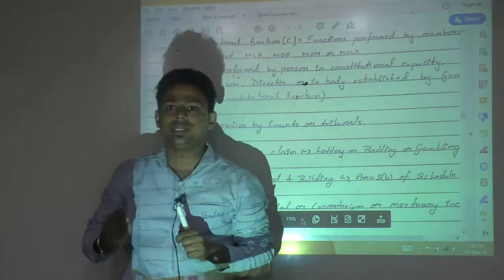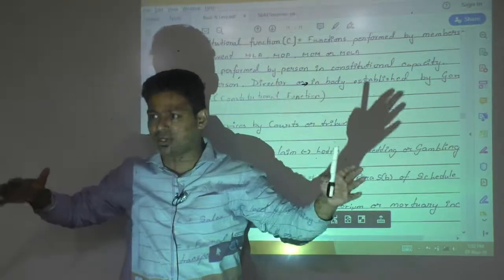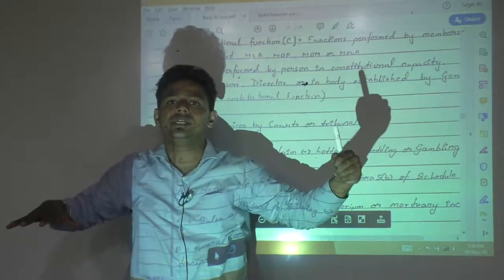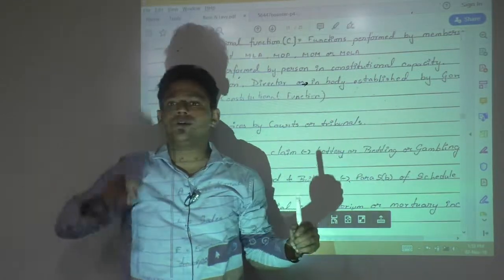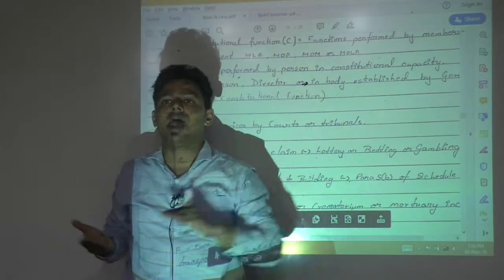But here in GST according to section 2 clause 52, goods have three definitions. Three parts: goods means goods, goods includes, and goods excludes. Goods means any kind of movable property. Goods includes, first item itself, actionable claim.